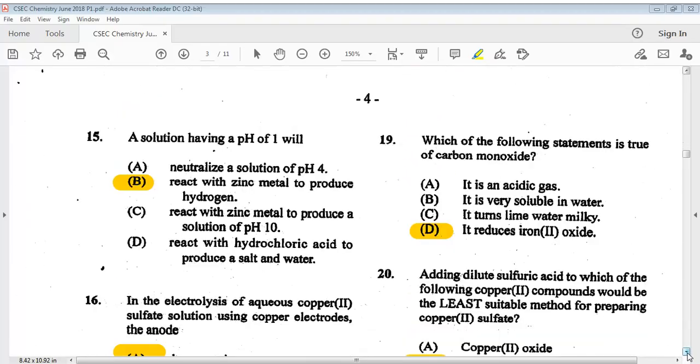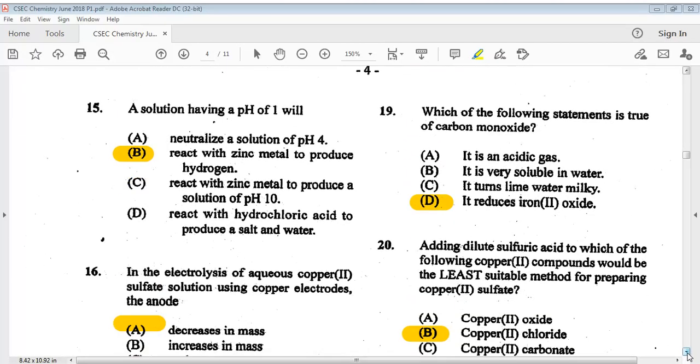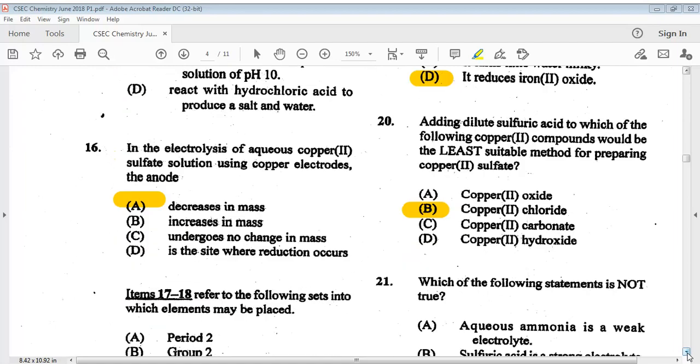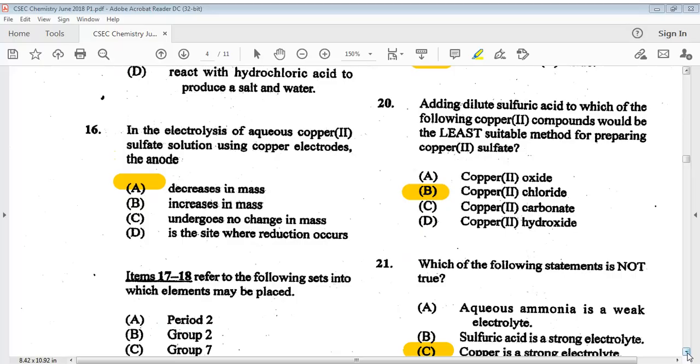Question fourteen: which of the following statements best describes the formation of a metallic bond? The answer is D. Number fifteen: a solution having a pH of 1 will? The answer is B, react with zinc metal to produce hydrogen.